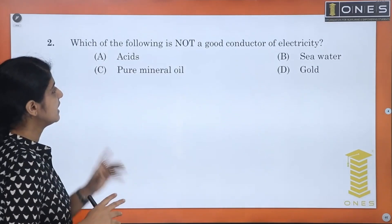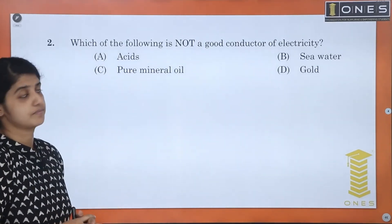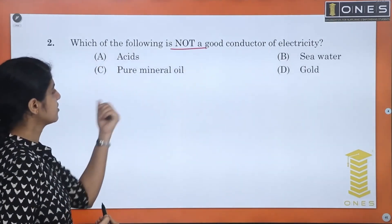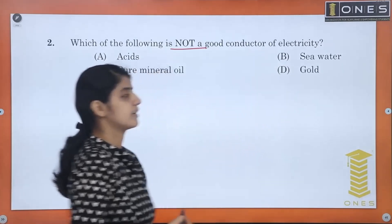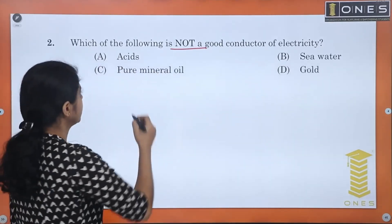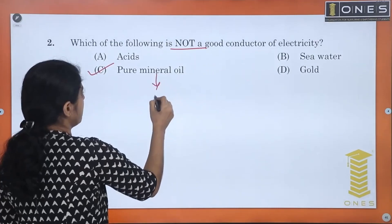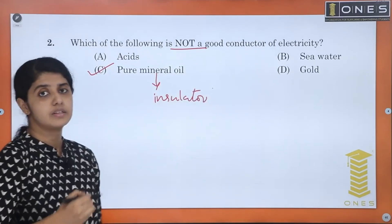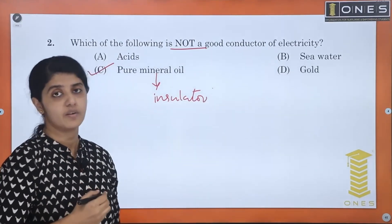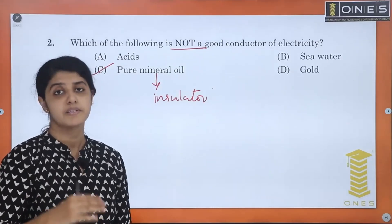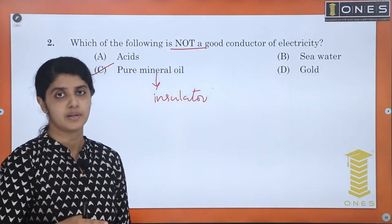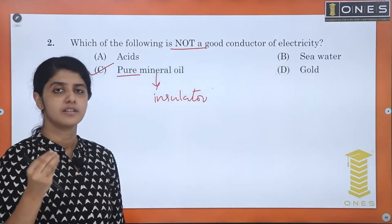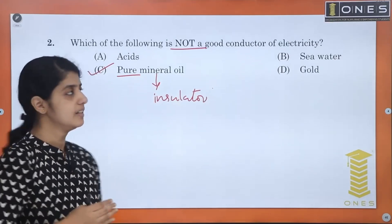Next question: which of the following is not a good conductor of electricity? The options are acids, pure mineral oil, sea water, and gold. The answer is pure mineral oil — it has an insulating property. In transformers, mineral oil is used for insulating and cooling purposes, so it does not conduct electricity.